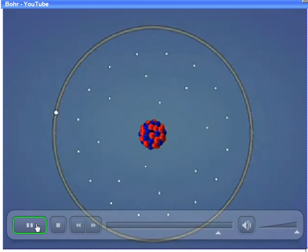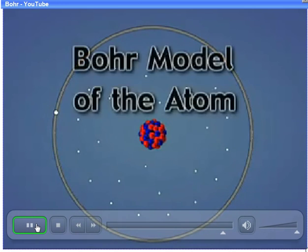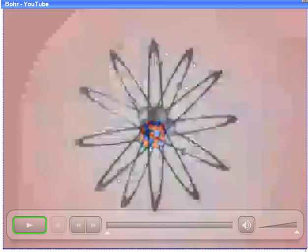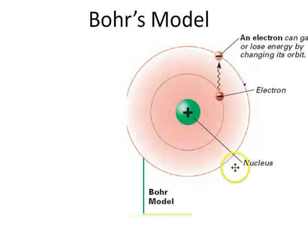Today, we refer to Bohr's theory as the Bohr model of the atom. So here's the diagram of Bohr's model from the book. Again, the positively charged nucleus, the electrons are in the circular paths that are called orbits. And in order for this electron to move between orbits, a very specific, definite amount of energy would have to be absorbed to go from this inner orbit to this outer orbit.